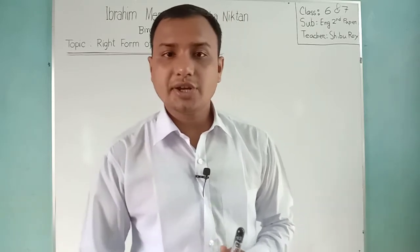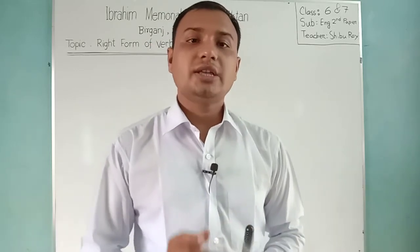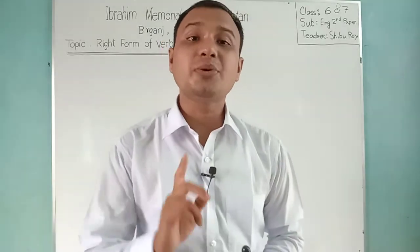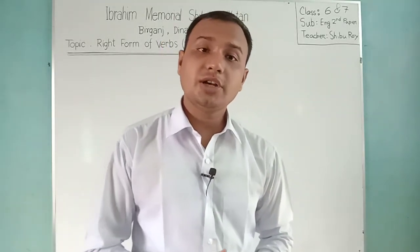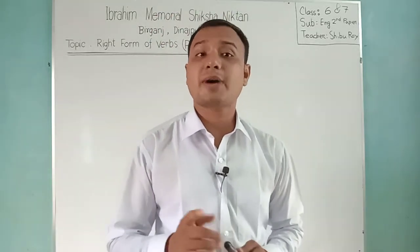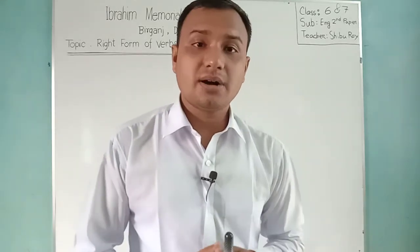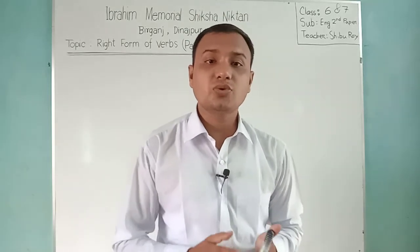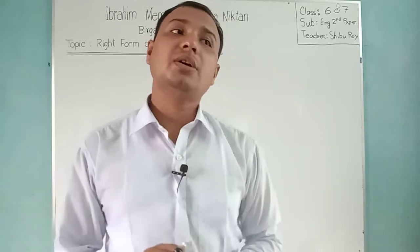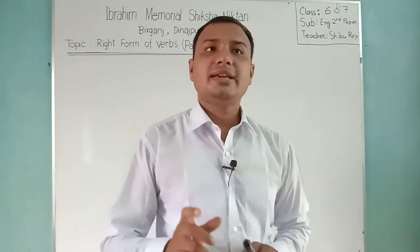Later, I told you that if we find two prepositions, after two prepositions, the verb takes its base form — that means V1 form. Later, I told you that if we find 'to be', then we will make it the V3 form — that means past participle form. After that, I gave you some idea about modal auxiliary verbs. Modal auxiliary verbs like can, could, may, might, shall, should, will, would — if any gap or verb comes after those modal auxiliary verbs, we will make it simply in the form of V1.